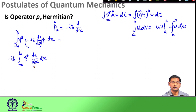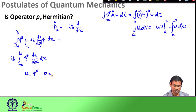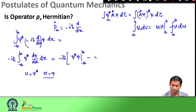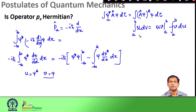In this term, I define u as ψ* and φ as psi. The form of this expression is u dv because this is dψ/dx. I can now use this formula: I have minus i h-bar, I evaluate u·v where u is ψ* and v is ψ at the two limits from minus infinity to plus infinity, minus the integral of v du, where v is ψ and du is dψ*/dx. This is what I get when I use integration by parts.